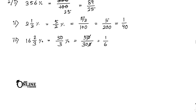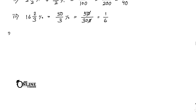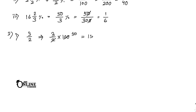Now number two: express the following fractions as percentages. The first one is 3 by 2. To convert to percentage, multiply by 100: 3 by 2 into 100 equals 150 percent. Number two: 9 by 20 into 100 equals 45 percent.